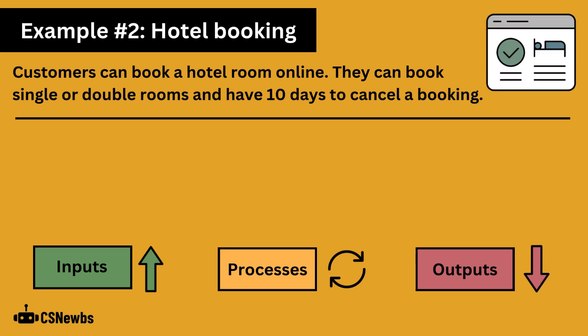Here is another scenario. Customers can book a hotel room online. They can book single or double rooms and have 10 days to cancel a booking. If you want to have a think, you can pause the video now before I put up the inputs, processes and outputs that I thought of.